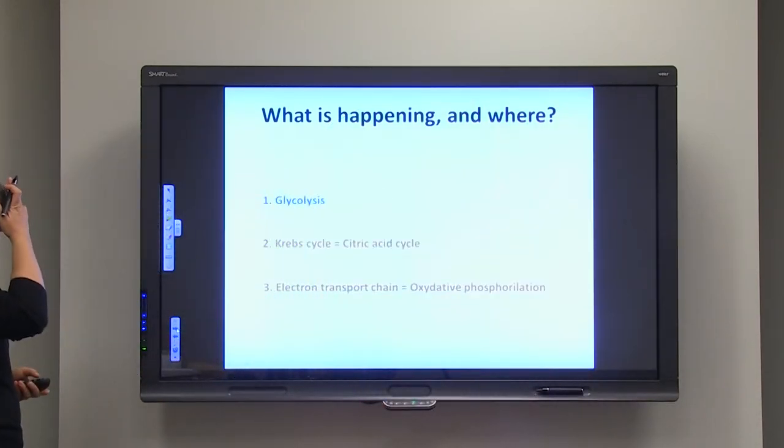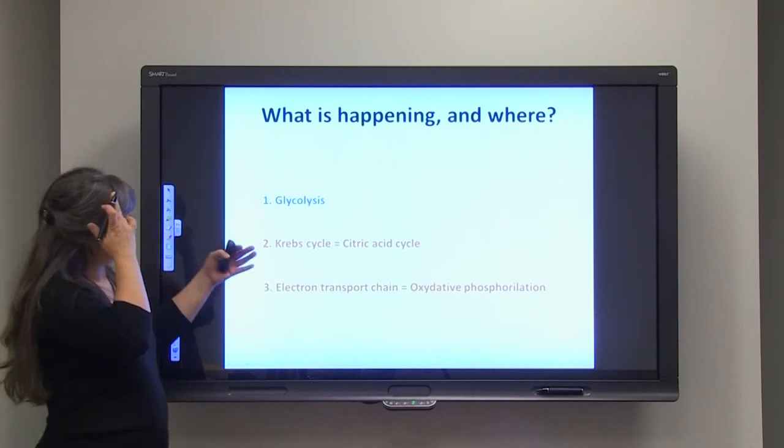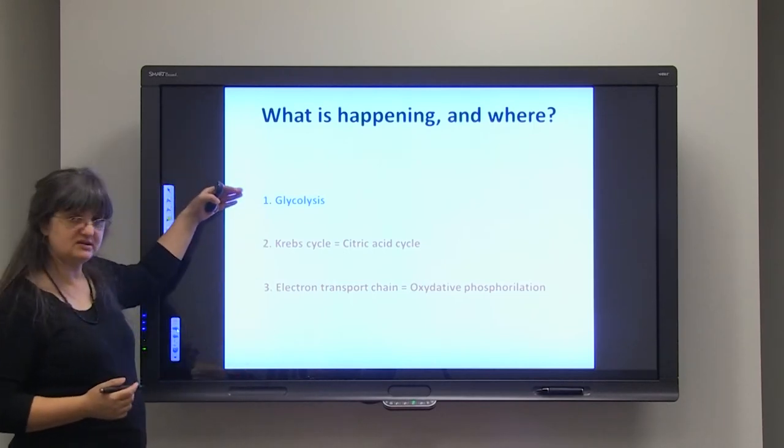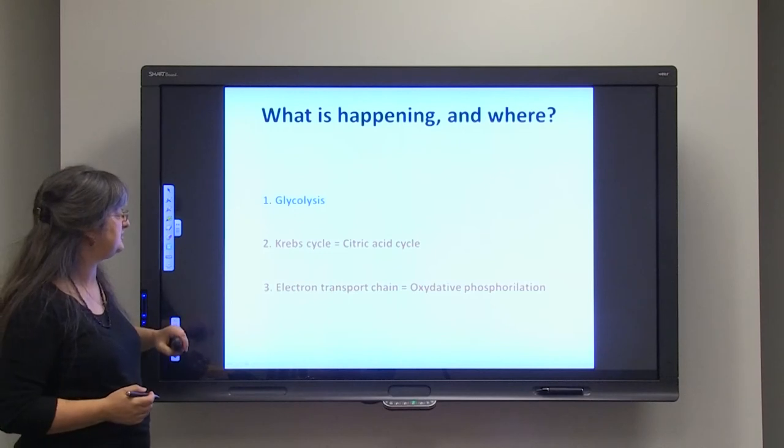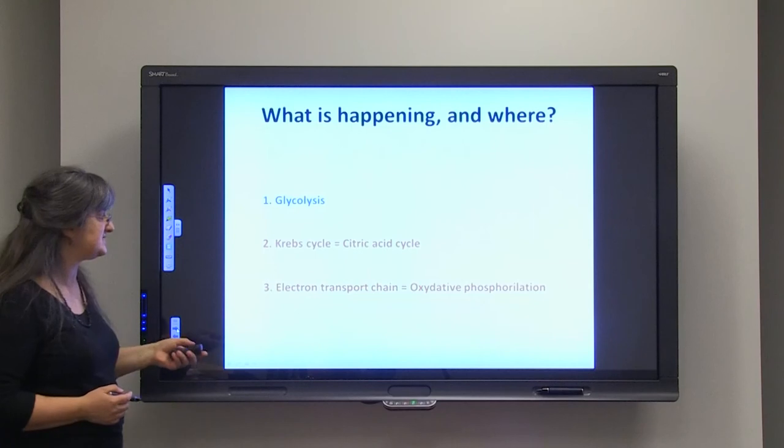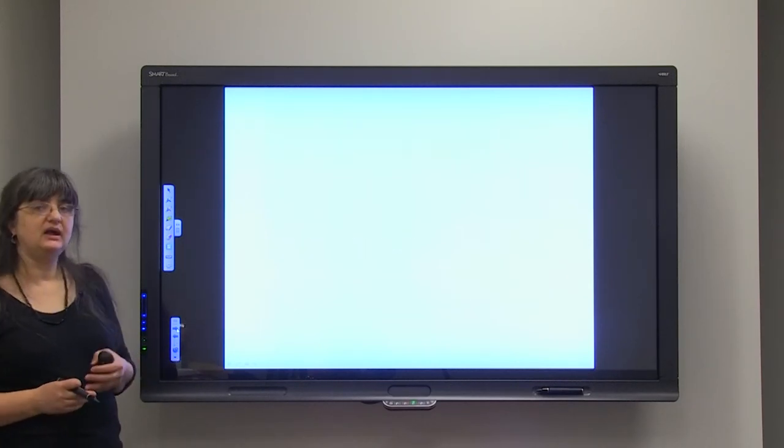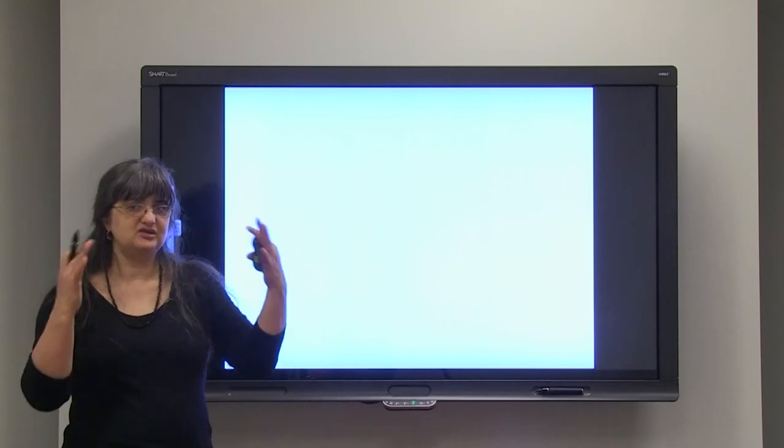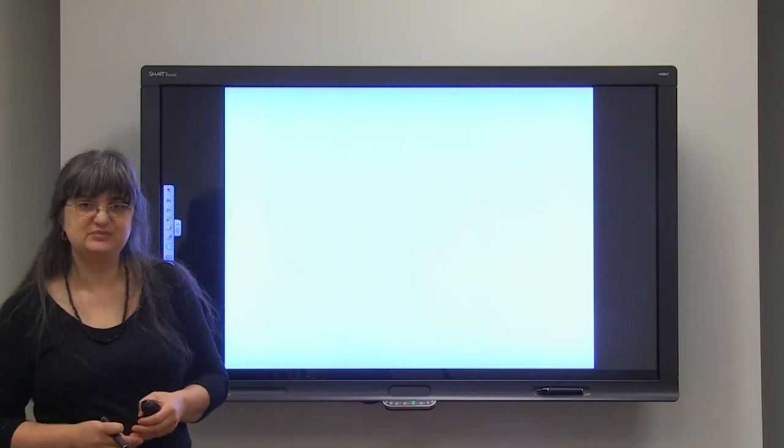So, let's see. Here are the parts. So, glycolysis is the first portion of breaking down the glucose. Krebs cycle or citric acid cycle. And electron transport chain or oxidative phosphorylation. That would be general about cell respiration.